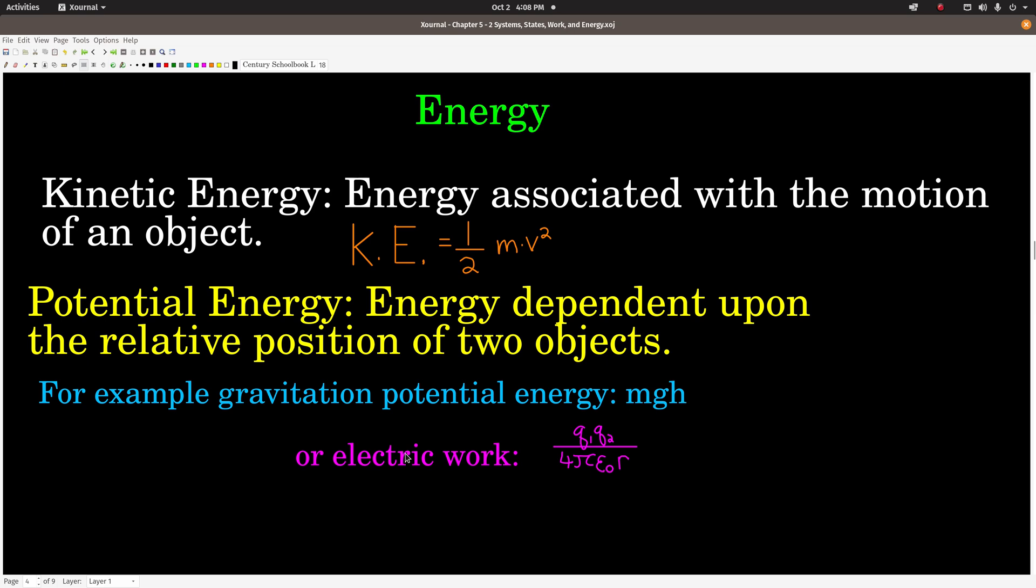Electric work is q1 q2 over 4π epsilon not r. You do not have to know these formulas. I'm just giving you examples of formulas of potential energy. The only formula on this page that I ask you guys to know is the kinetic energy formula: one-half mass times velocity squared.